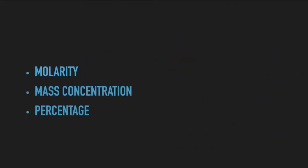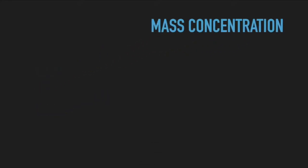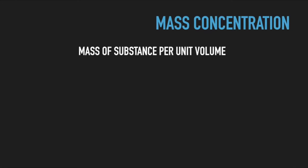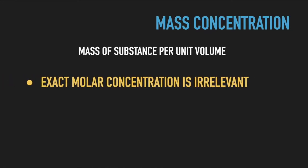In molecular biology and biochemical labs, we also often use mass concentration — that is, the mass of substance per unit volume. Mass concentration is used when the exact molar concentration is irrelevant. For example, we know that 50 micrograms per milliliter of the antibiotic ampicillin is sufficient to prevent growth of bacteria that do not carry the corresponding resistance gene. 50 micrograms per milliliter corresponds roughly to 143 micromolar concentration, but for preparing a stock solution, the molarity is less useful than mass concentration.